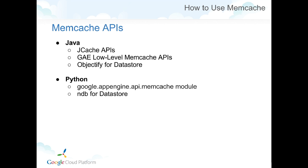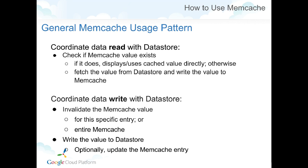The usage pattern is the same whether caching Datastore results or API computations. For a data read, first check the Memcache. If it contains your data, return the value. If it doesn't, fetch the data from the Datastore and update the cache entry. For a write operation, first invalidate the existing value in Memcache — either the specific entry or the entire cache — then write the new value to the Datastore and optionally load it into Memcache as well.